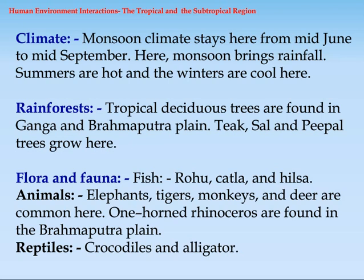Rainforests: Tropical deciduous trees are found in Ganga and Brahmaputra Plain. Teak, Sal, and Poplar trees grow here.